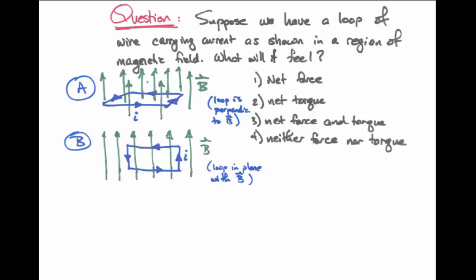Let's consider two situations in which a loop of current is situated inside a region of magnetic field. In the first case, the loop is perpendicular to the direction of the magnetic field. In the second case, the loop is in the plane along with the magnetic field.